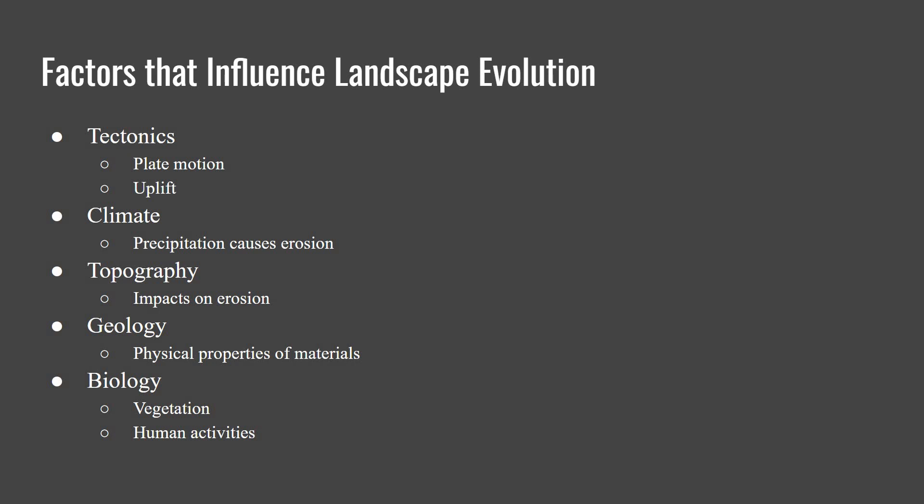Third is topography, which is also important. The steepness of your slope impacts erosion and also what can grow there. Elevation impacts what can grow there, as well as the weathering and erosion processes that happen at different elevations due to different climates. The direction your slope is facing also impacts climate, vegetation, and weathering.